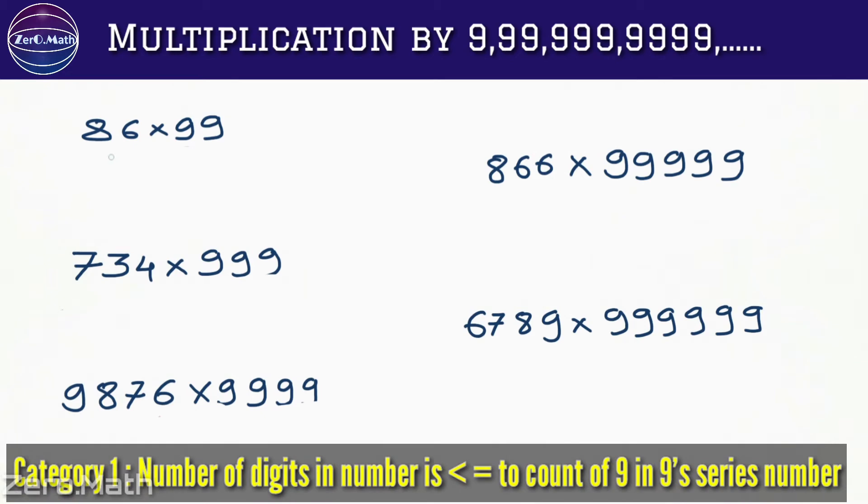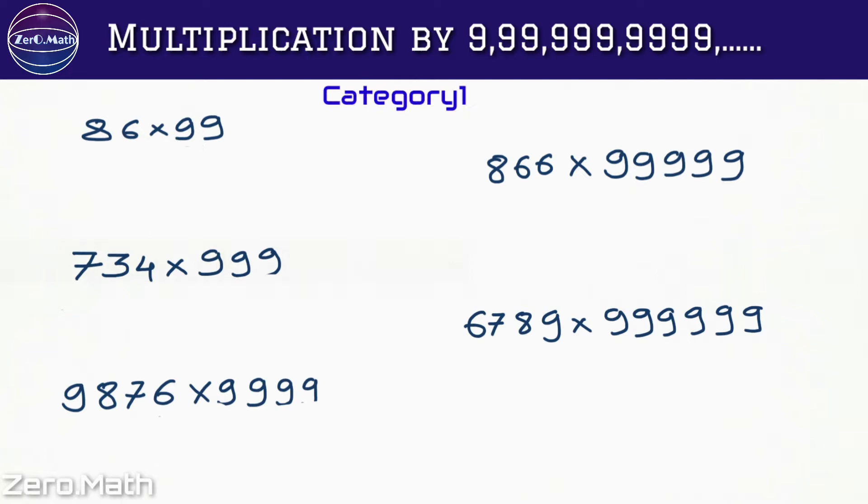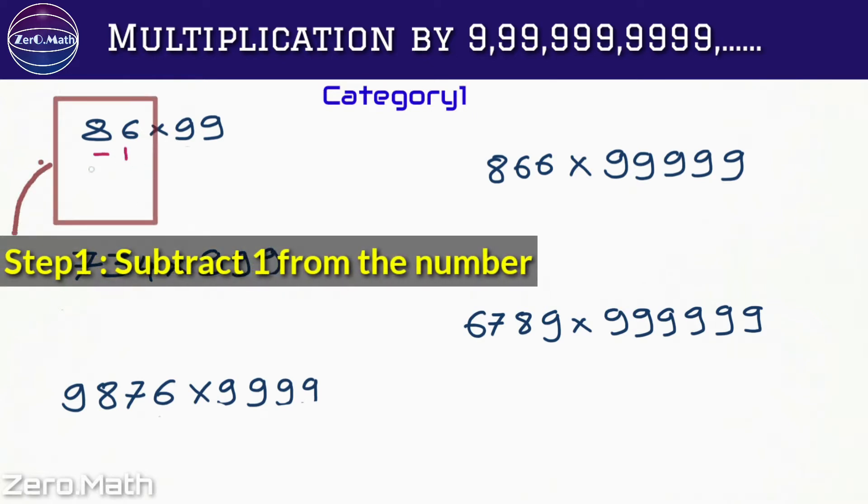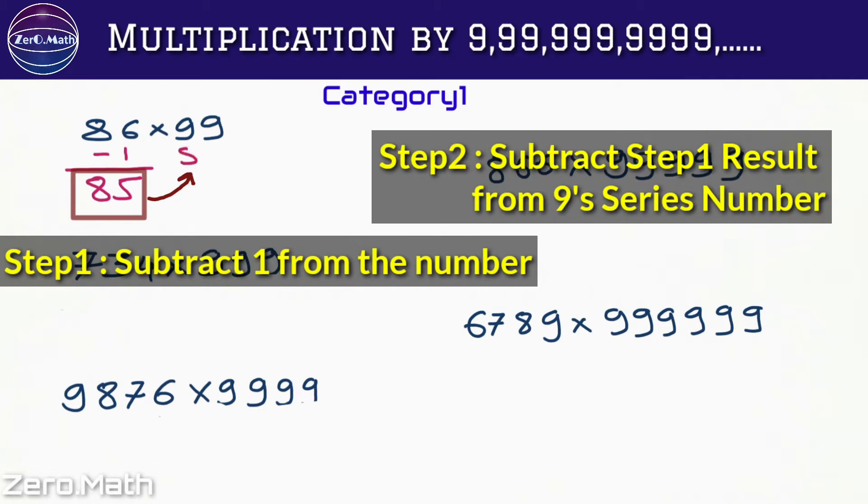Let's start with Category 1. Let's multiply 86 by 99. The first step I'm going to perform is I'm going to subtract 1 from this number 86 so that I will get 85. Take this result 85 and subtract it from number 99 so that we will get 9 minus 5 is 4 and 9 minus 8 is 1. So 8514 is our answer. I'll repeat the step: First step, subtract 1 from the number which you are multiplying with 9 series number. Get the result and subtract it from the 9 series number. That's it and your answer will be ready.